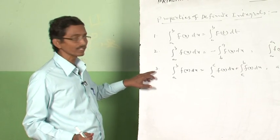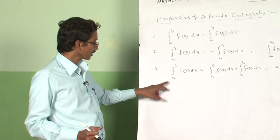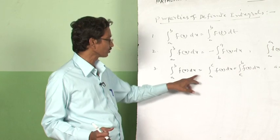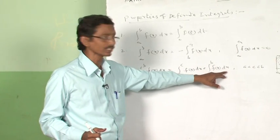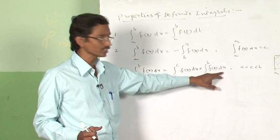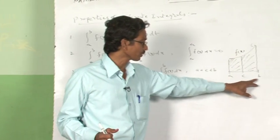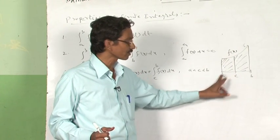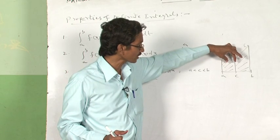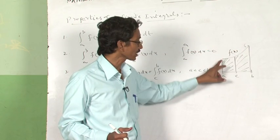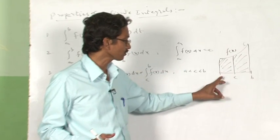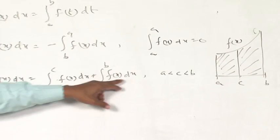Property 3: the integral from a to b of f(x) dx equals the integral from a to c of f(x) dx plus the integral from c to b of f(x) dx. We can split the interval [a, b]: if c is a point between a and b, then the integral is divided as the sum of two parts, representing the sum of two areas.